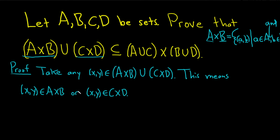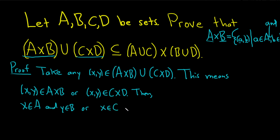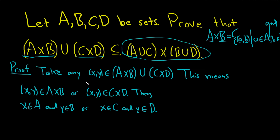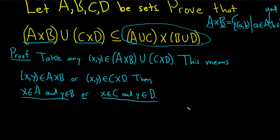We can go a little bit further and write down what this means. This means that x is in A and y is in B — that's what it means for (x, y) to be in the Cartesian product A cross B. Or it would mean that x is in C and y is in D. What we're trying to show is that (x, y) is in (A union C) cross (B union D). So let's take cases and analyze each one.